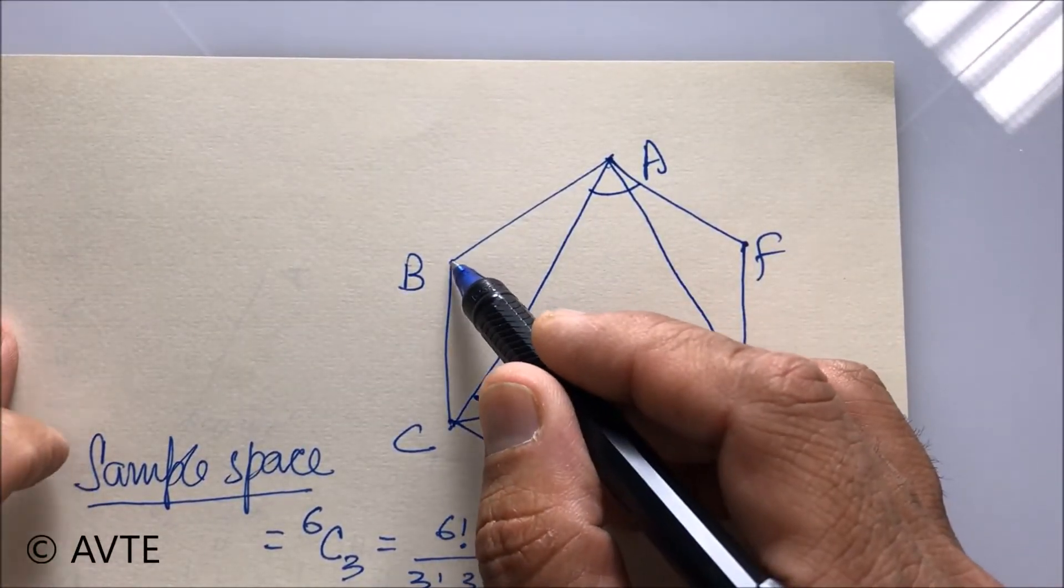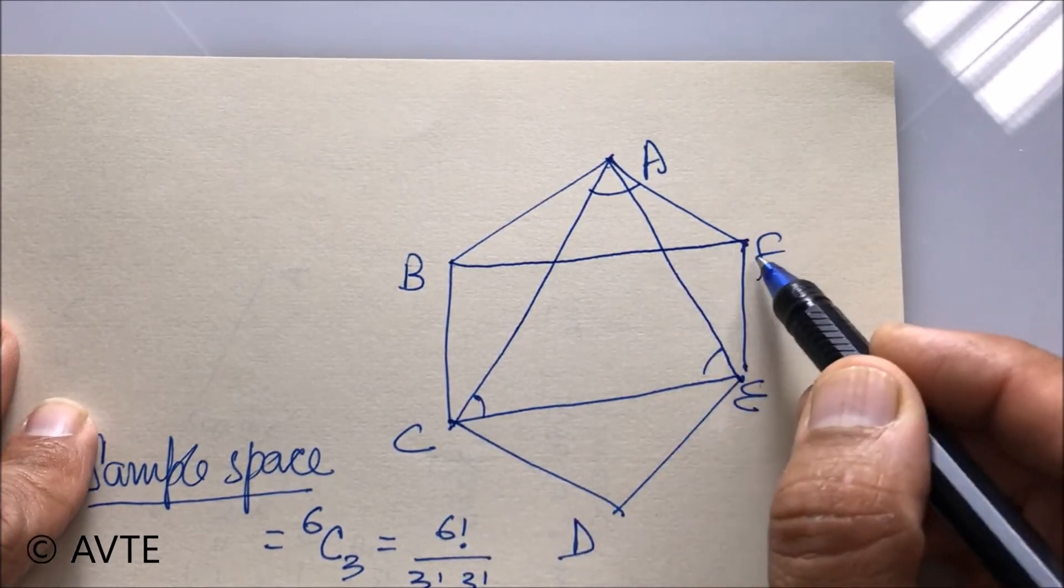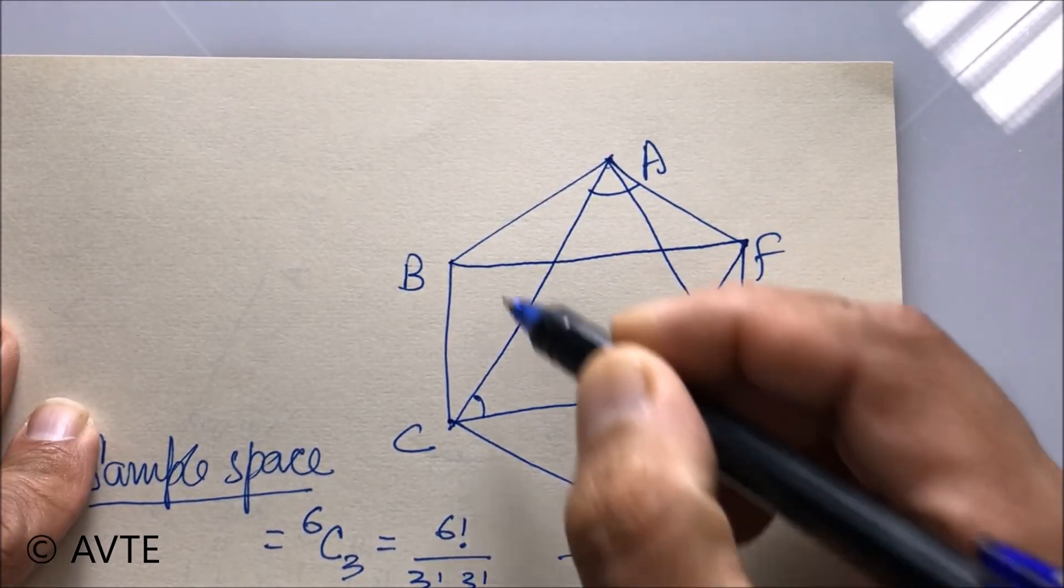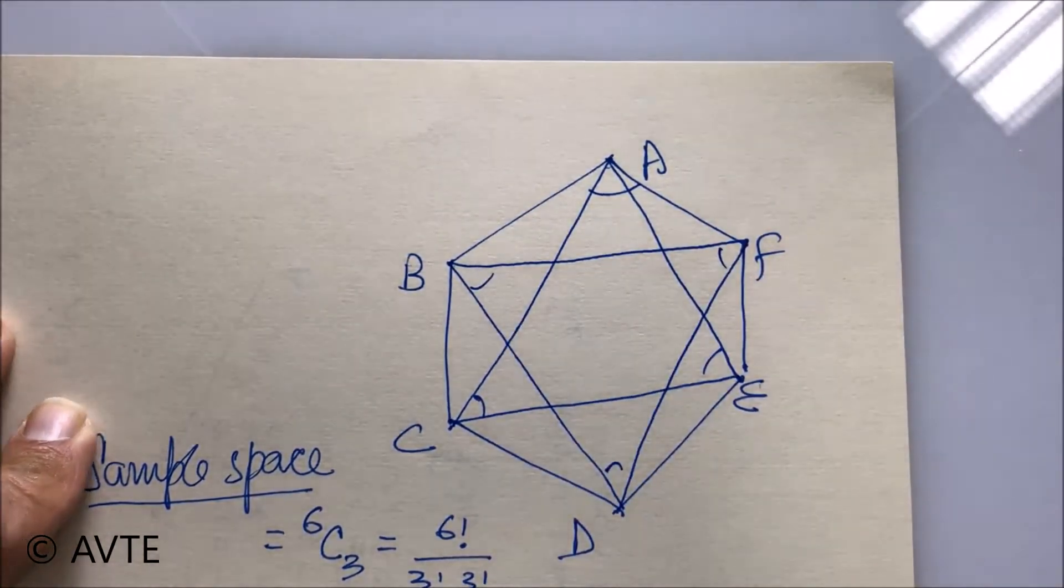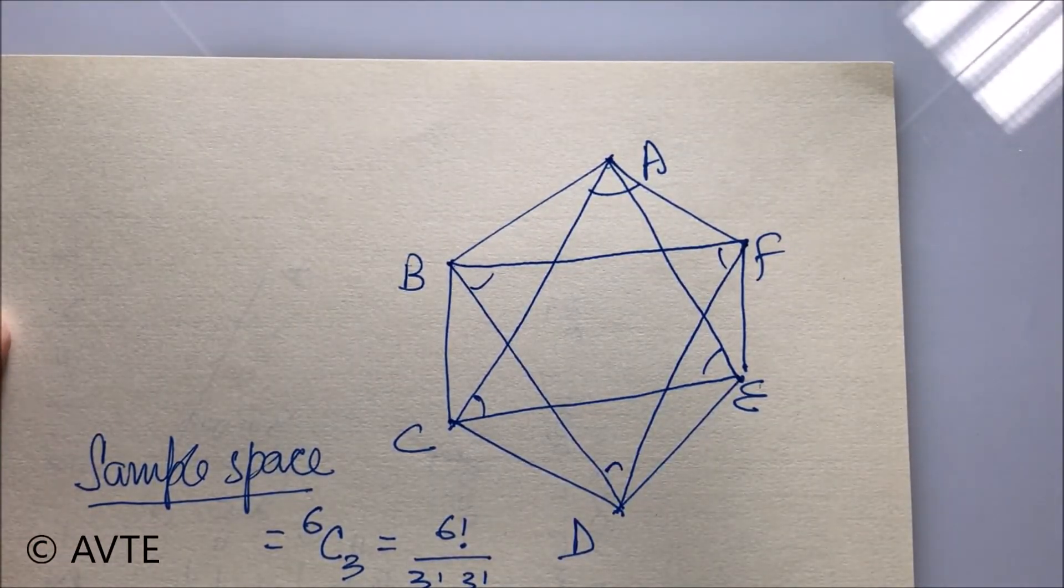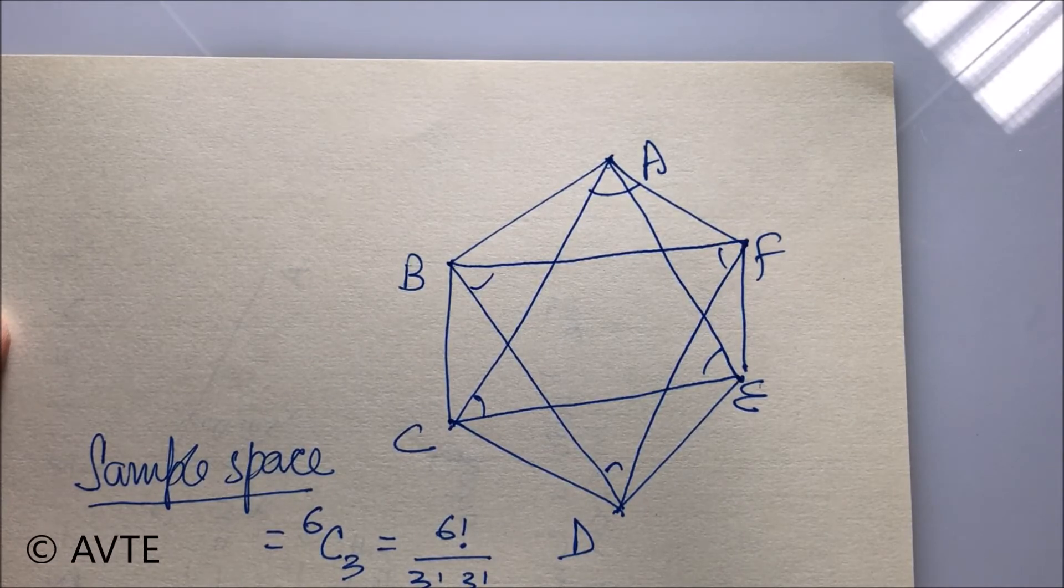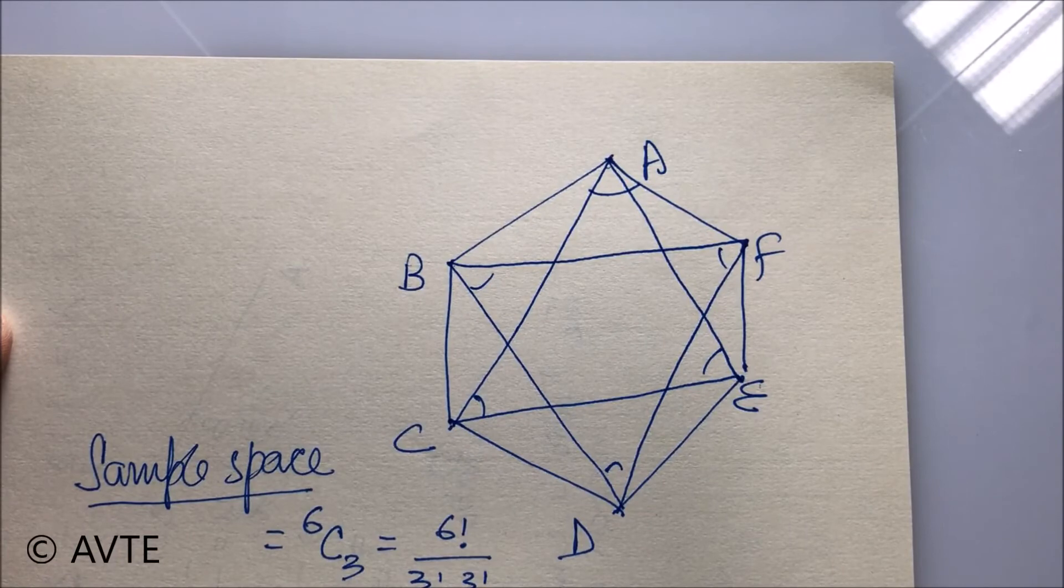And similarly, if I join B, F and D, this will also be 60 degrees. So the two triangles, triangle ACE and triangle BDF are equilateral.